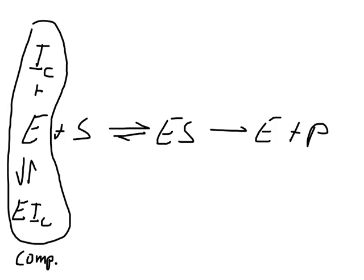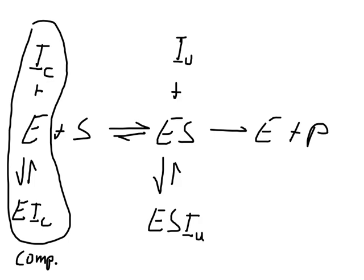We can also look at an uncompetitive inhibitor. An uncompetitive inhibitor interacts exclusively with the enzyme-substrate complex — it would not interact with the free enzyme. We can write I-U for our uncompetitive inhibitor, and it forms reversibly a complex with the enzyme-substrate complex, giving us an enzyme-substrate-inhibitor complex.